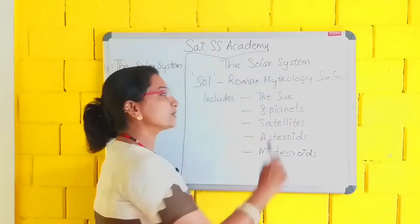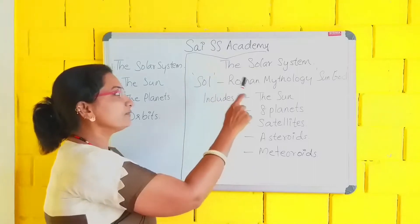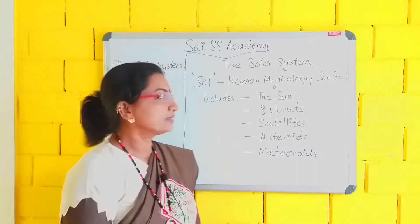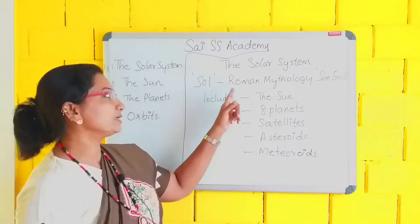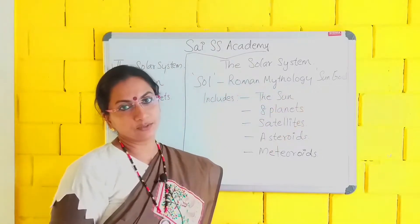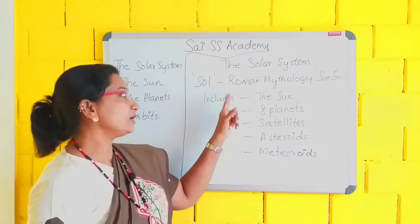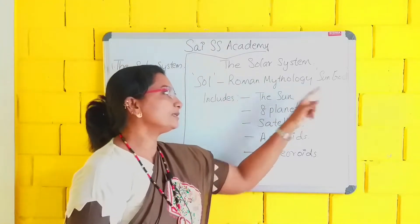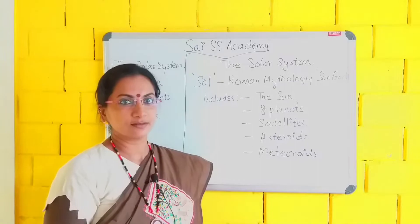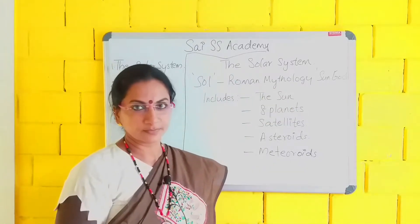First we can start with the solar system. Where did the name solar system come from? Solar means 'sol'. Sol in Roman mythology means sun god. S-O-L, sol, in Roman mythology it means the sun god. That means the sun and the family, together we call it the solar system.